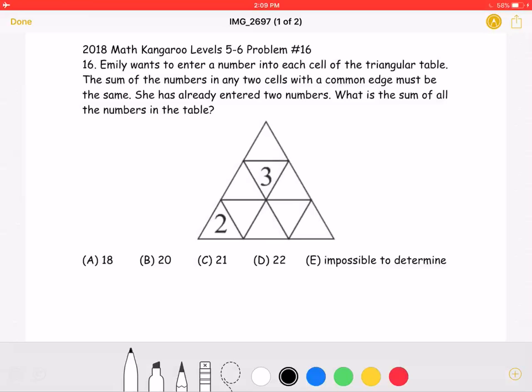The sum of the numbers in any two cells with a common edge must be the same. She has already entered two numbers. What is the sum of all the numbers in the table?